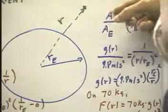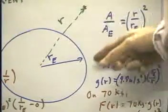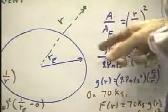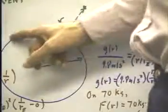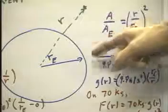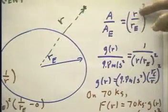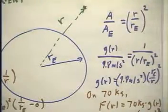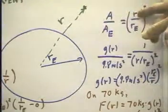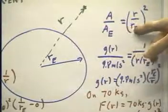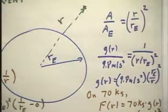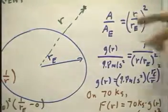Now, if we let A be the area of the sphere out here at radius r, and A sub e be the area of the earth's surface, then the ratio of the area out here to the area in here will be the ratio of the radii squared. That should be fairly obvious. The area out here is 4πr², the area here is 4πr_e². You divide 4πr² by 4πr_e², you get (r/r_e)². Fairly straightforward.